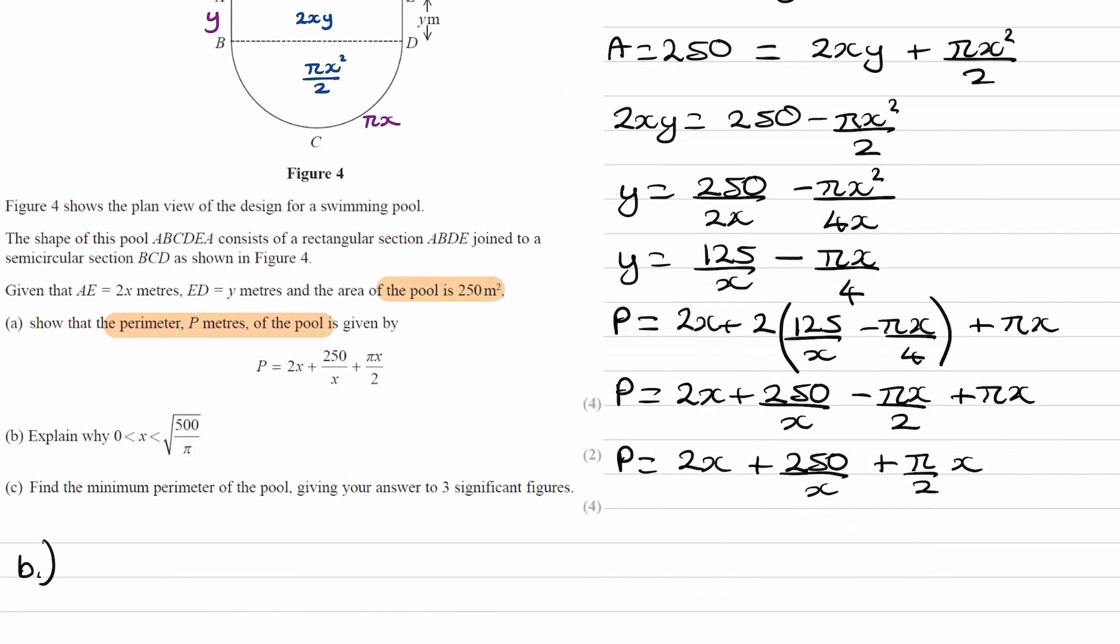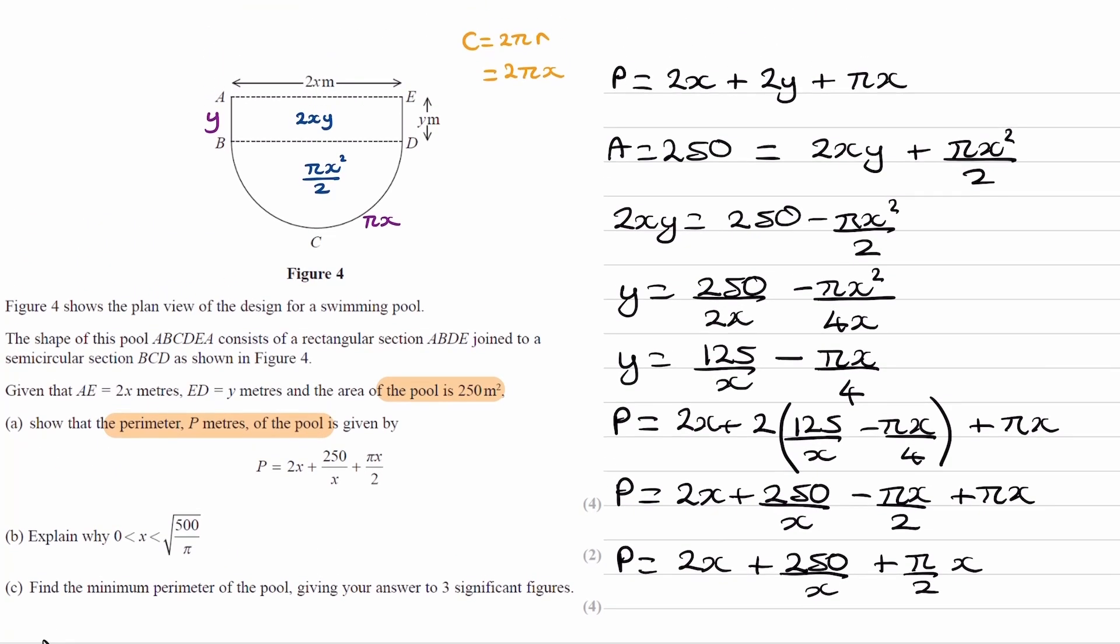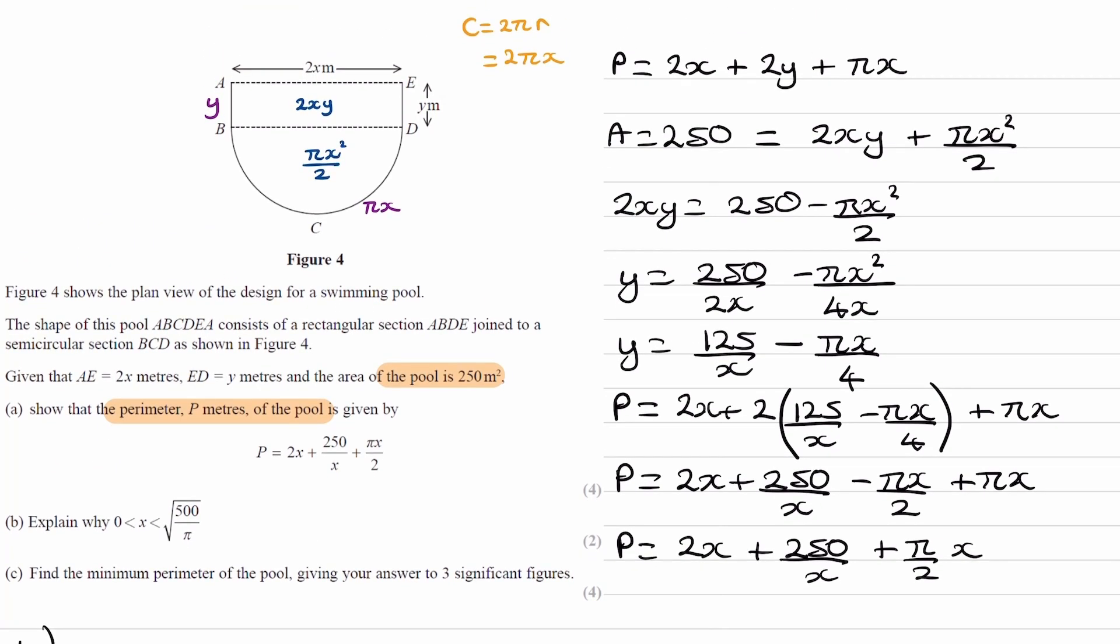On to part b. We want to explain why x is between 0 and √(500/π). In our question, there aren't any explicit inequalities given to us for x or y or area. So we're going to have to think about what are the constraints in our system. And from that, we should be able to get this inequality here. I'll focus on the right-hand side to begin with. We have x has to be less than √(500/π). Why would this be the case?